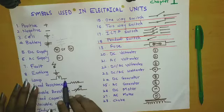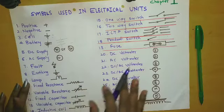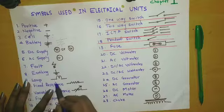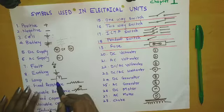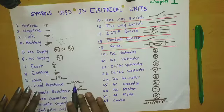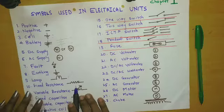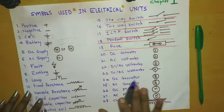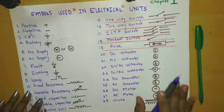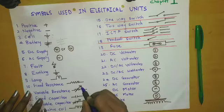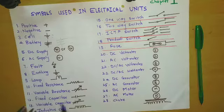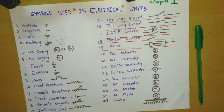Lamp — whenever we have to connect a lamp in the circuit then we use this symbol. Resistance — this is a fixed resistance and this is a variable resistance. When the term variable comes, we just add an arrow. Fixed capacitor, variable capacitor. Inductive coil — this is the symbol of an inductive coil.